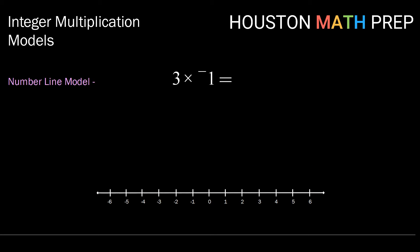Let's model 3 times negative 1. These values are going to tell us how many steps to take, in what direction, and which way to face.